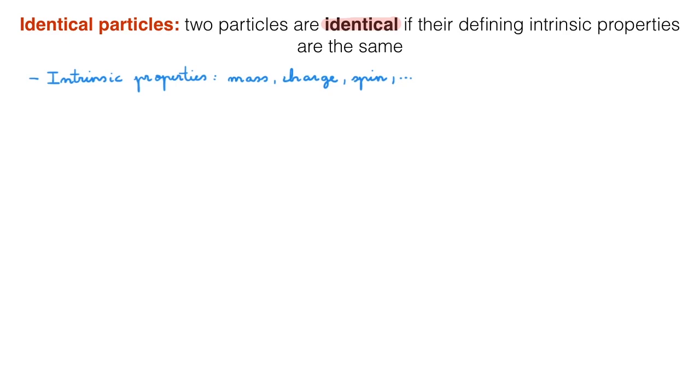With this definition, all electrons are identical to each other because they have the same mass, the same charge, the same spin, and so on. You can consider another elementary particle, for example the muon, and again all muons are identical to all other muons because they have the same intrinsic defining properties.